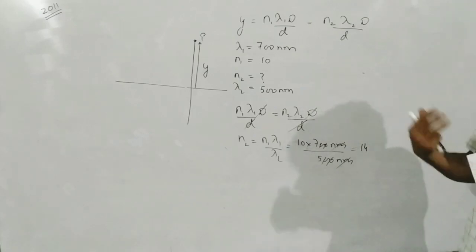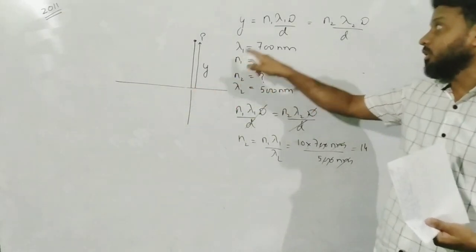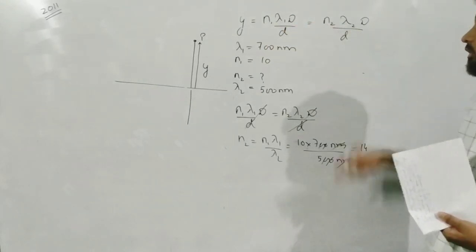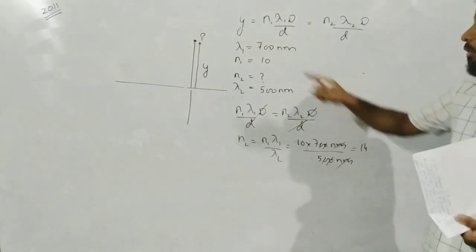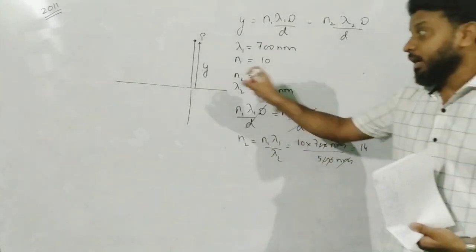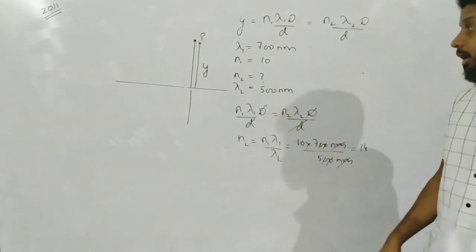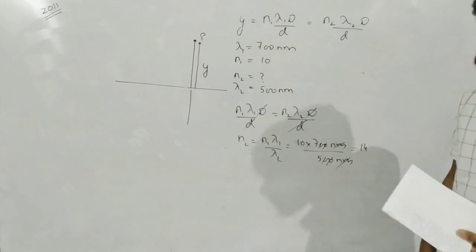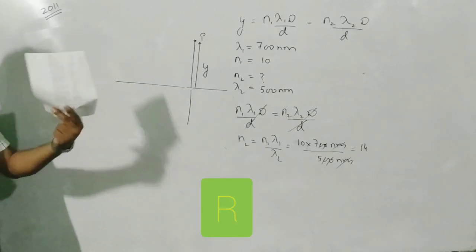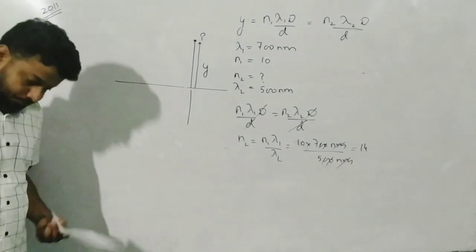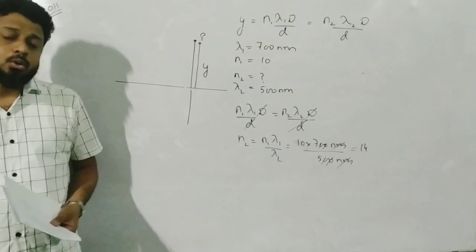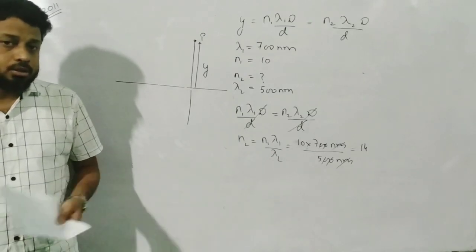At those overlap points you are going to get hybrid colors. Also, at the center point, for n = 0 for both wavelengths, y = 0. So the central point will be the zero order fringe for both colors of light, and you will also get a hybrid color there — not the color corresponding to 700nm or 500nm, but a mixture.